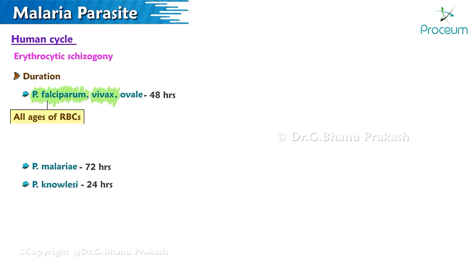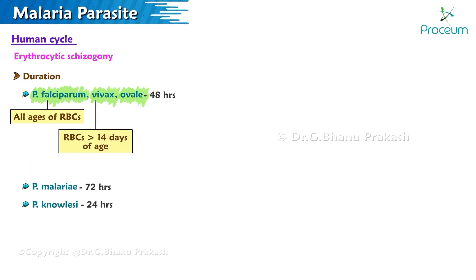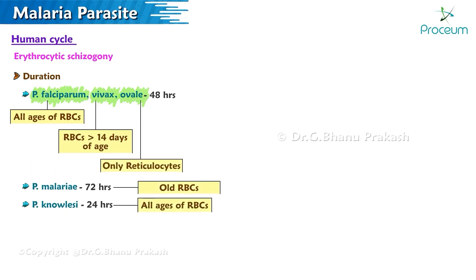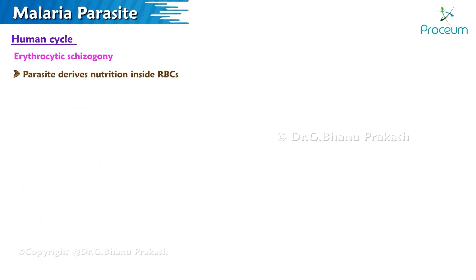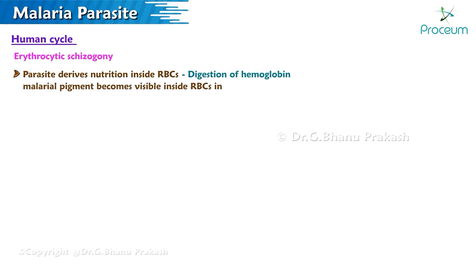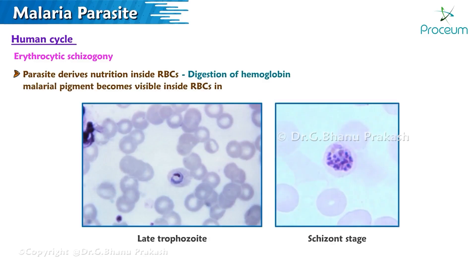Plasmodium vivax only infects red blood cells more than 14 days of age. Plasmodium ovale infects only reticulocytes, and Plasmodium malariae infects old red blood cells. Parasitemia of more than 2% leads to severe malaria. The parasite derives nutrition by digestion of hemoglobin inside the red blood cells.